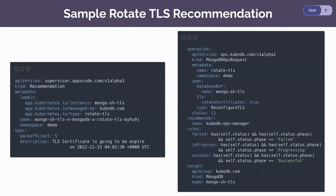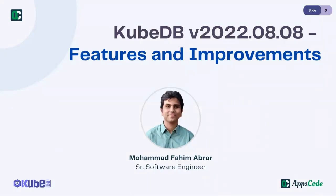Now let's see a sample Rotate TLS recommendation YAML. In the description section, it says that the TLS certificate is going to expire on a specific date, so the user is notified at least one month before by default. The user can execute this recommendation according to their need when traffic tends to be low in the cluster. In the operation section, there is a MongoDB OpsRequest of type reconfigure TLS, and in the target section, it contains the database name, kind, and API group. That's all from the KubeDB Recommendation Engine.